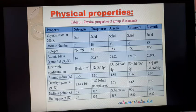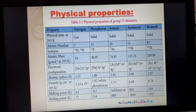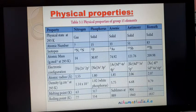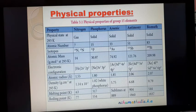Electronic configuration: for nitrogen, the valence shell configuration is 2s² 2p³. All the elements in this group contain 5 electrons in the valence shell — 2 electrons in the s orbital and 3 electrons in the p orbital — giving exactly a half-filled electronic configuration. Except the first two elements, nitrogen and phosphorus, the other elements — arsenic, antimony, bismuth — are called heavier post-transition series elements, because after filling the d-orbital and f-orbital, electrons enter the higher p-orbital.